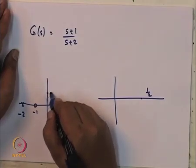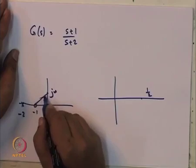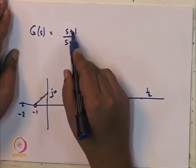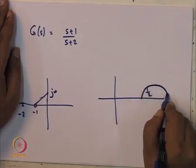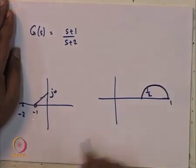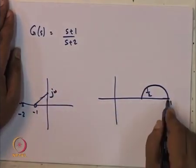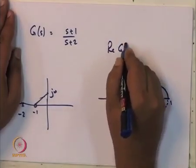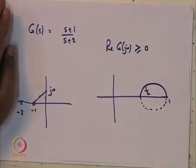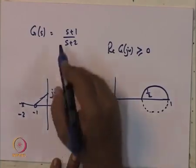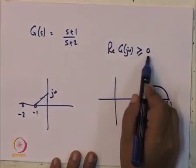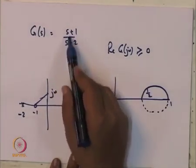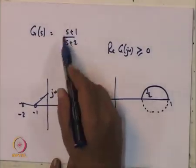As you go up, at any particular jω, the angle from the zero is larger than the angle from the pole, so it is going to be positive. As jω tends to infinity, this finally tends to 1. So you end up with a Nyquist plot which goes to 1. It is clear that the real part of G is greater than or equal to 0. By that definition, this transfer function is positive real. Of course, if you also put in the fact that it should be stable, well this transfer function is also stable. Therefore, by both definitions, this transfer function is positive real.